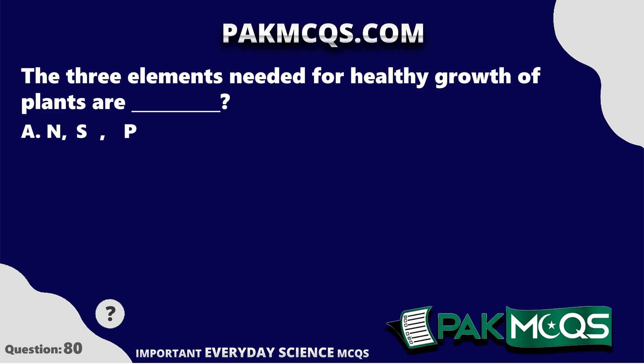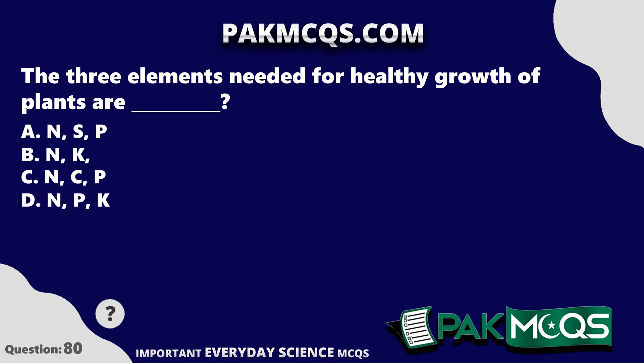The three elements needed for healthy growth of plants are Nitrogen, Phosphorus, and Potassium.